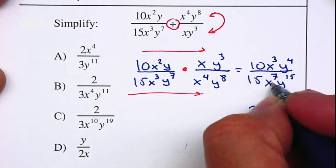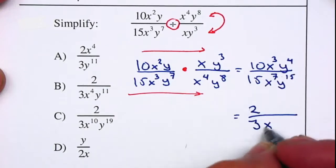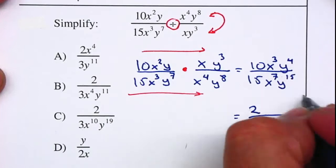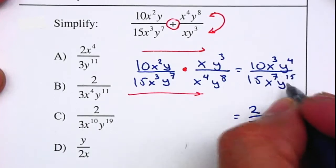x's. I have 3 and I have 7. 3 of them cancel, so therefore I have 4 left over. y's. 4 and 15. 4 of them cancel, so there are a total of 11 left.